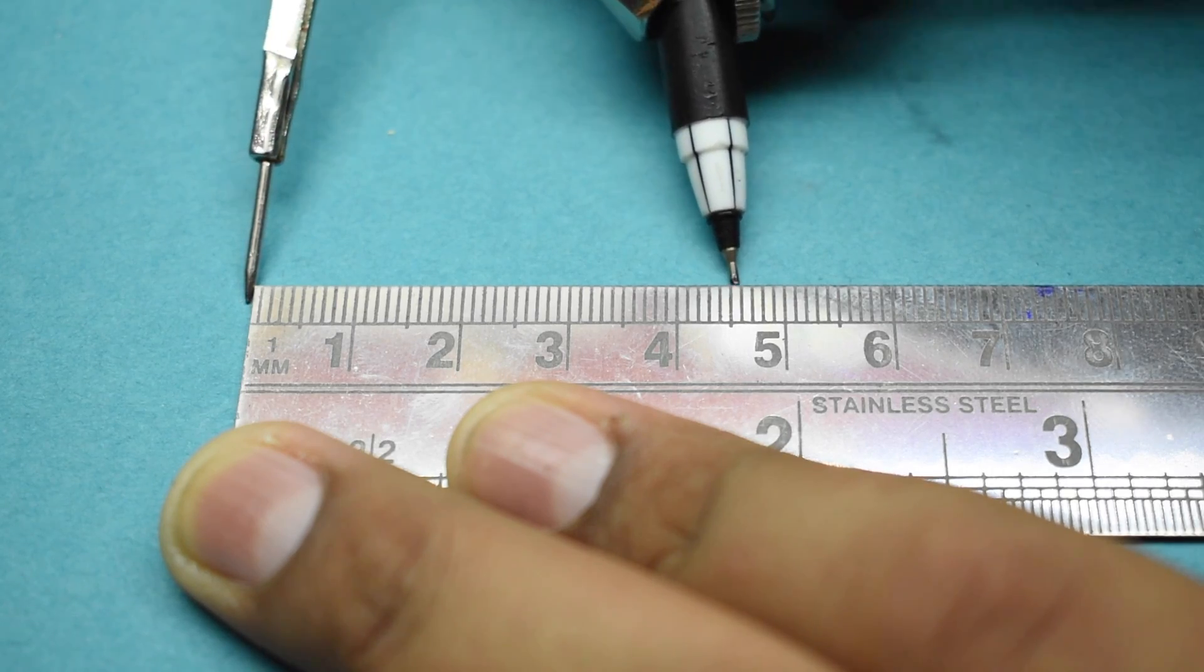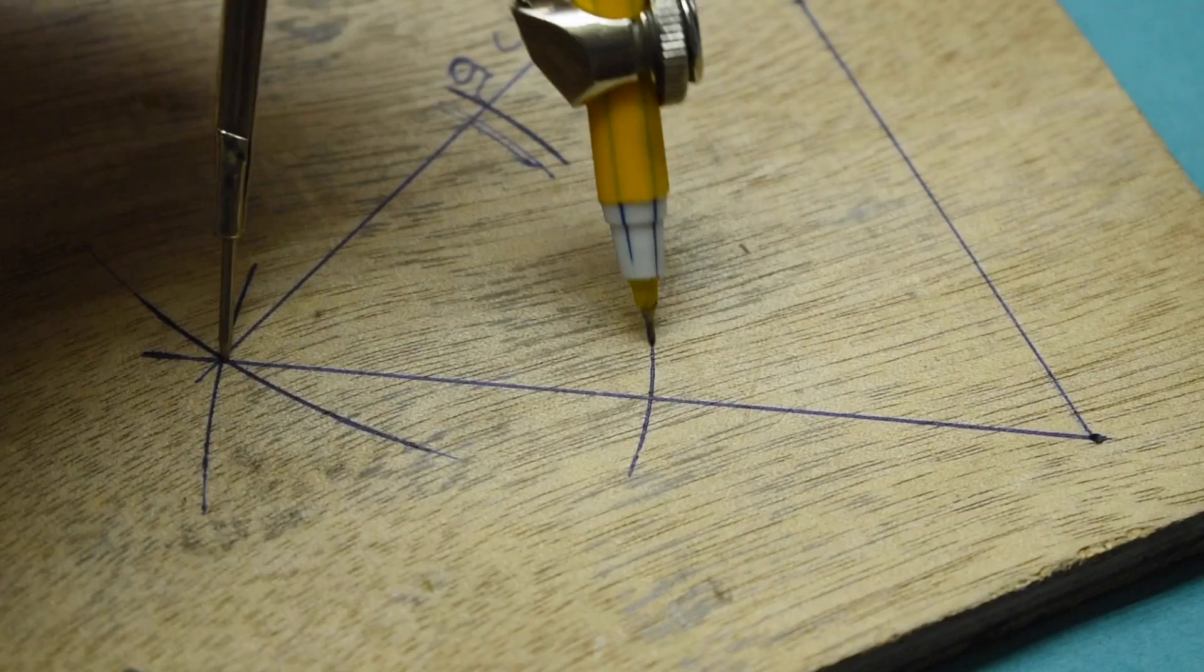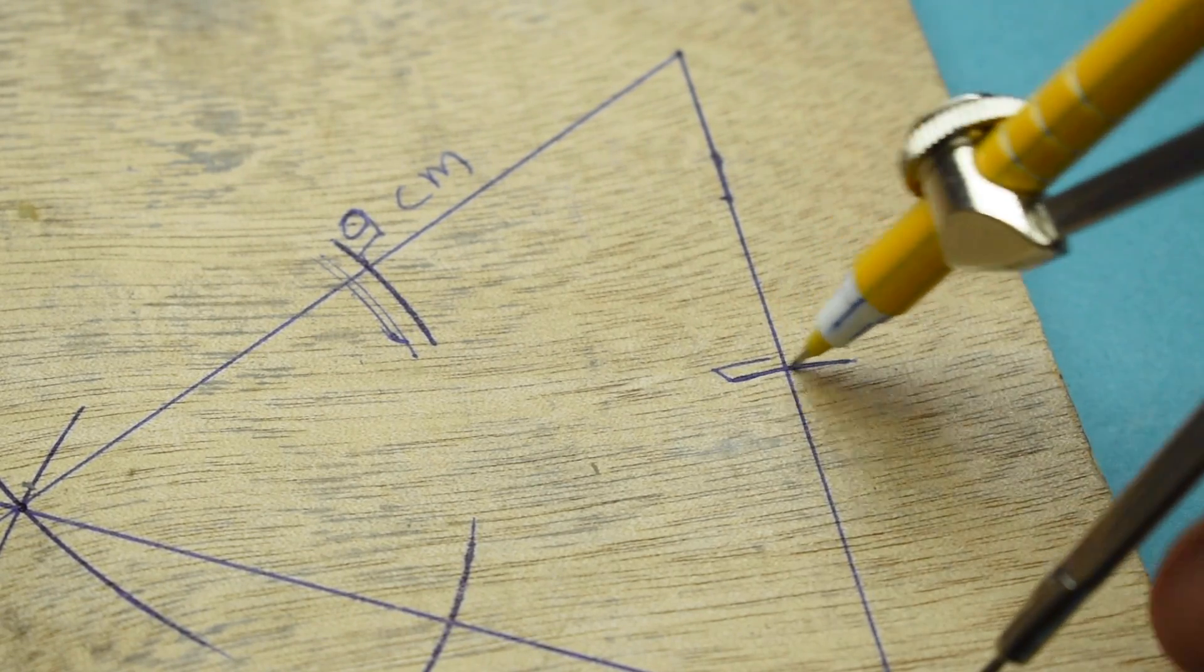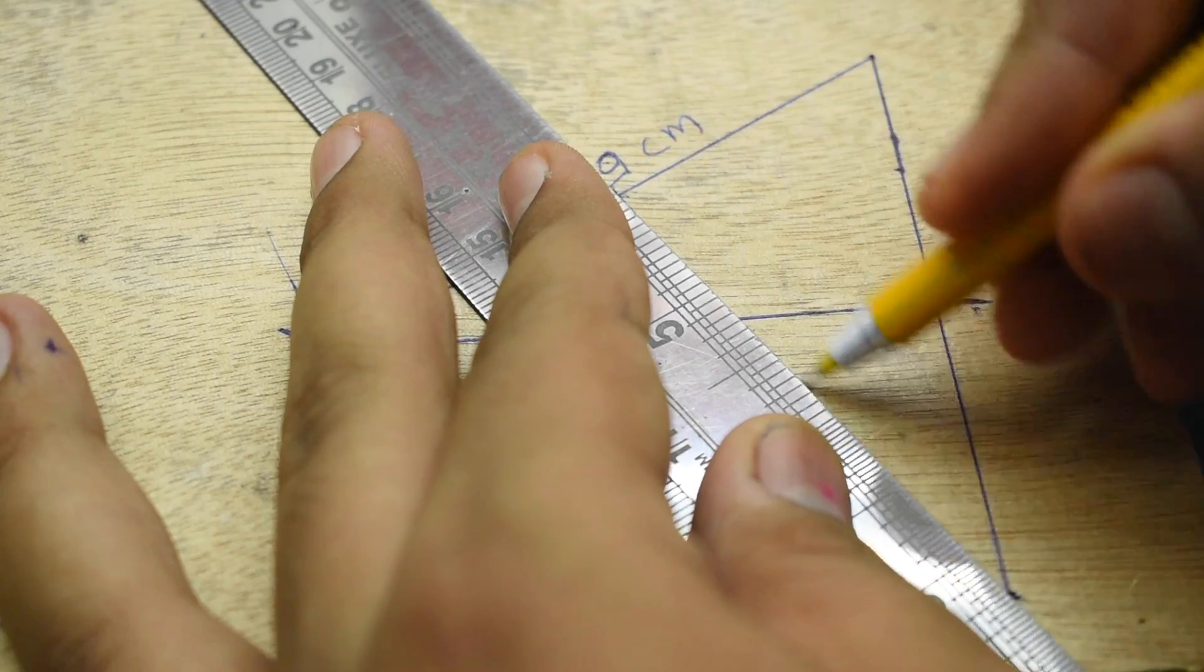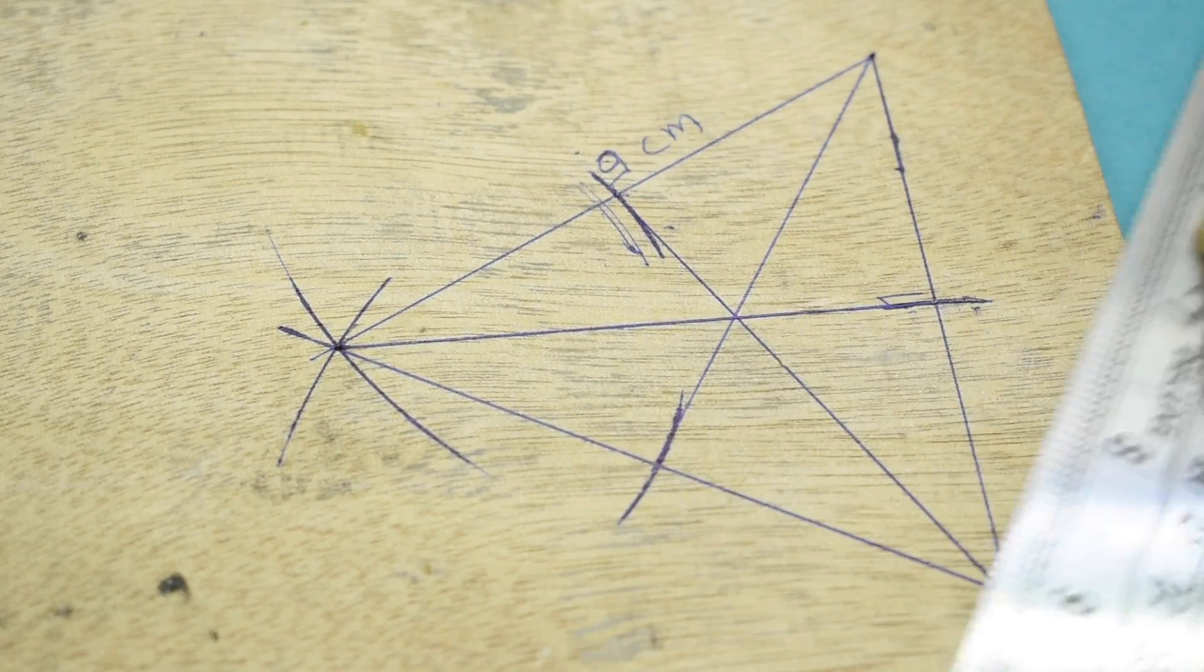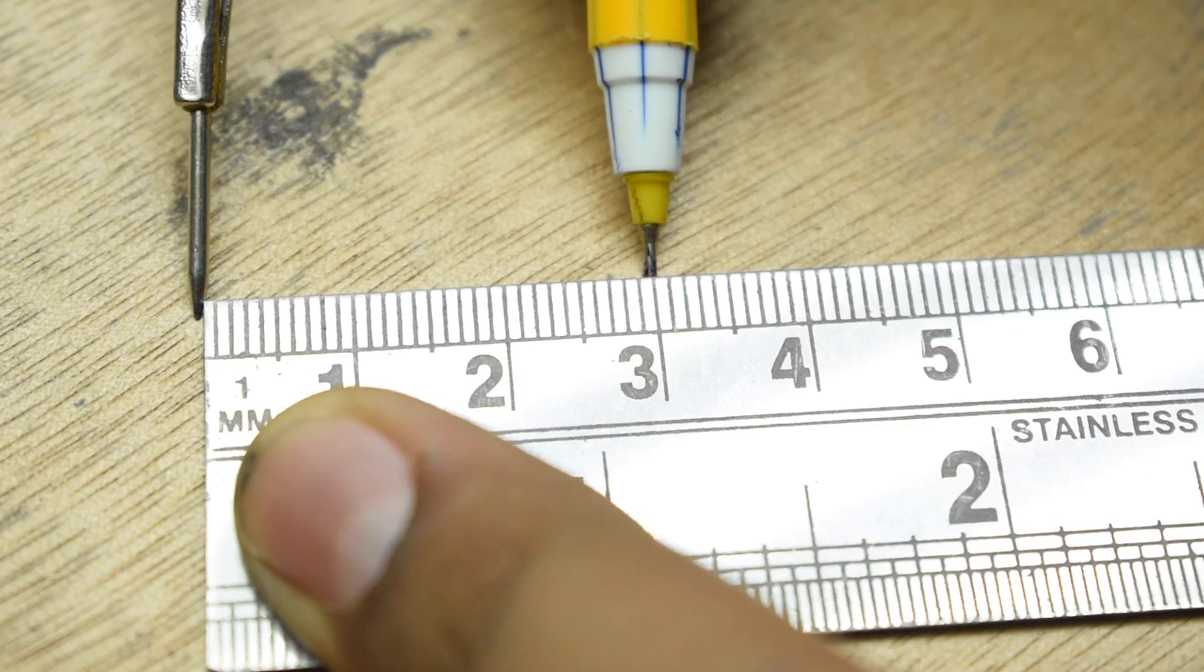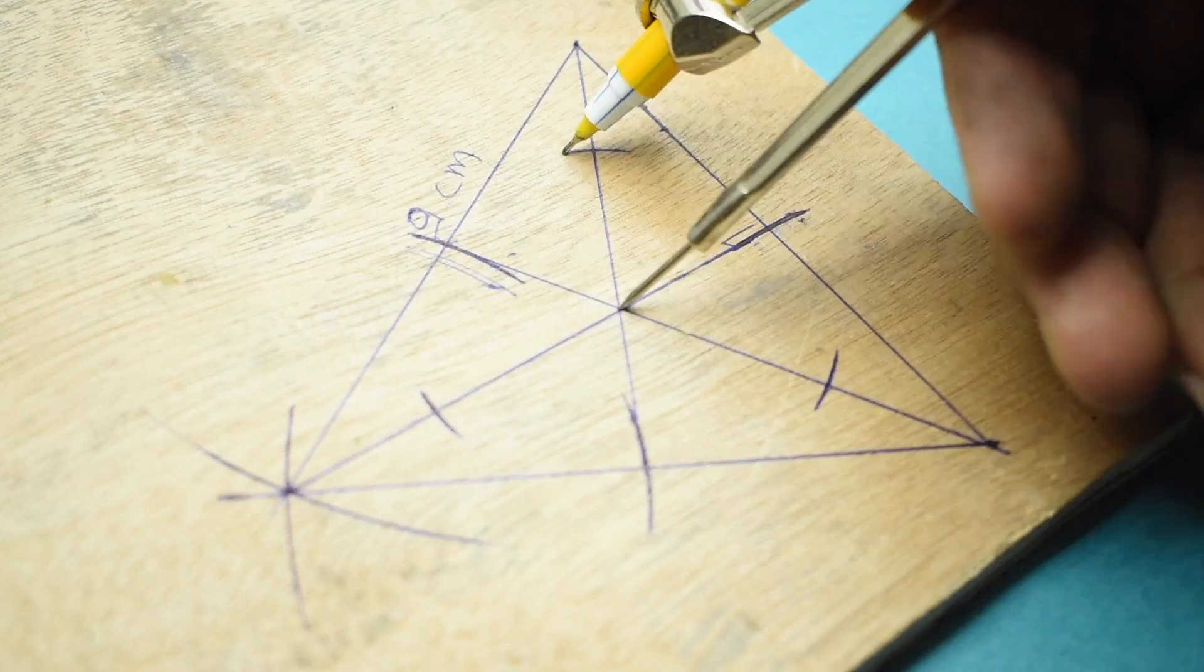Now set your compass to a length of 4.5cm and make an arc from each vertex of the triangle to the respective side. The point where the arc hits the side is the midpoint of that particular side. Now join all those midpoints with their corresponding opposite vertex. The place where all these medians meet is called a centroid. Now set your compass to a length of 3cm and from the centroid make an arc on each median as shown.